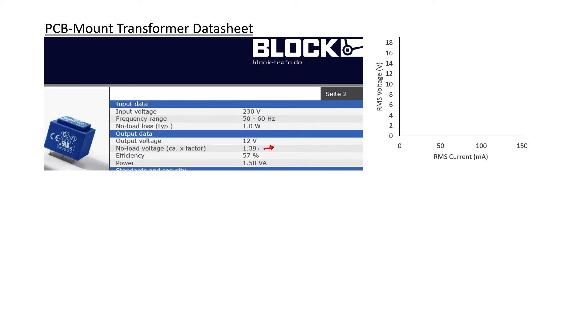First of all, we can find the no-load voltage. The datasheet tells us there is a correction factor of 1.39. Our no-load voltage is thus 16.68 volts. The power indicated here is basically the maximum load.